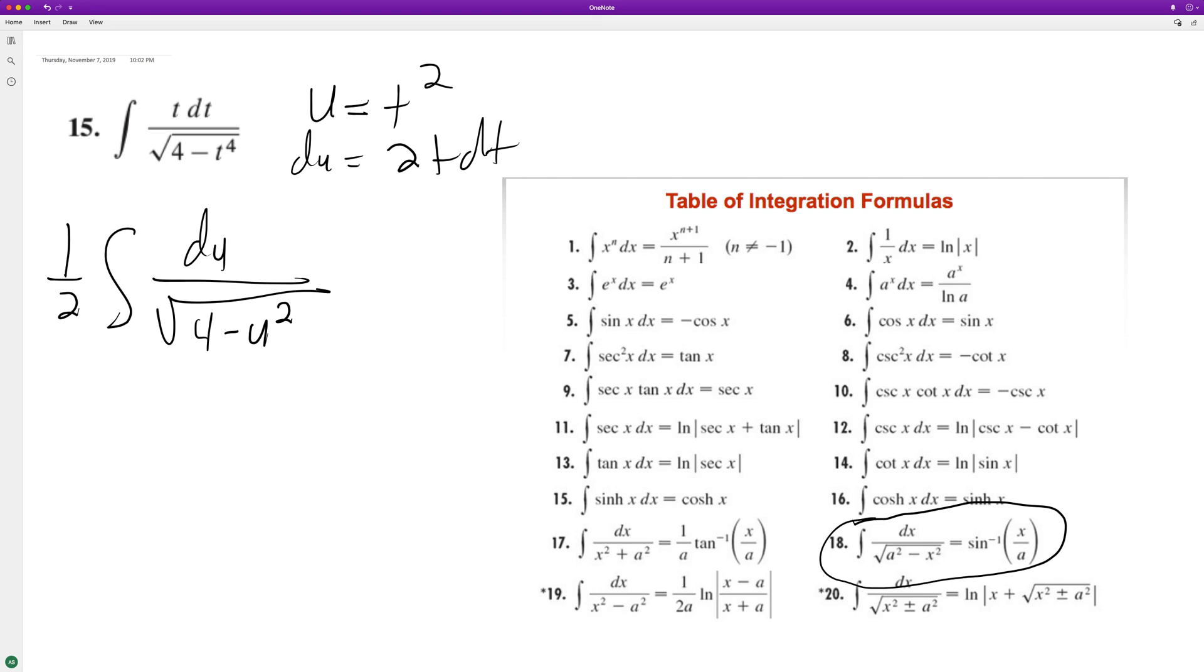So we integrate this and what we end up with is one-half from the one-half their coefficient, and this becomes arcsine of x. So we got our x, so that's going to be our u over, and then our a.